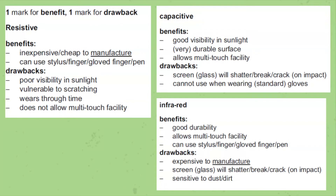Now let's look at the benefits and drawbacks, starting with Capacitive. Capacitive screens are really good in sunlight as their visibility is best amongst the three. They also have a very durable surface and allow multi-touch facility. The drawbacks are the screen is fragile and you can't use it when wearing gloves. Memory tip: G for good visibility, D for durability, A for allowing multi-touch, S for screen fragileness, G for can't use while wearing gloves. Hope this memory trick works for you.